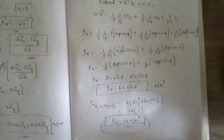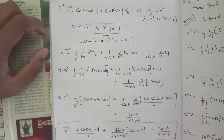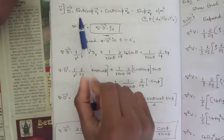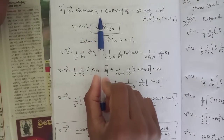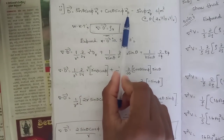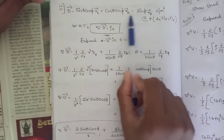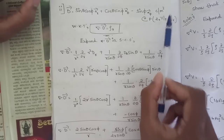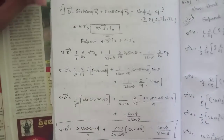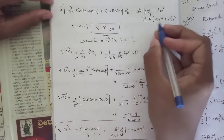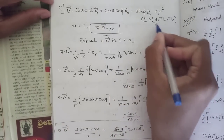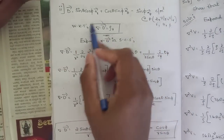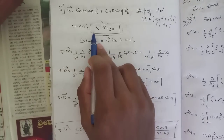For the second sub-question, D is given as sinθ cosφ ar vector + cosθ sinφ aθ vector − sinφ aφ vector coulombs per meter squared, and the point is P = (2, π/3, π/6). Observing the components, this is in the spherical coordinate system with r, θ, and φ. The relation del·D = ρv still applies.